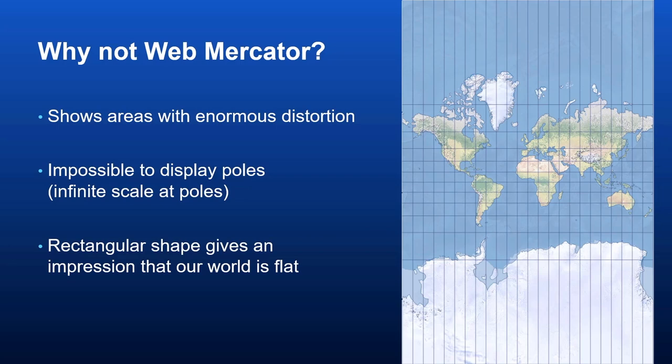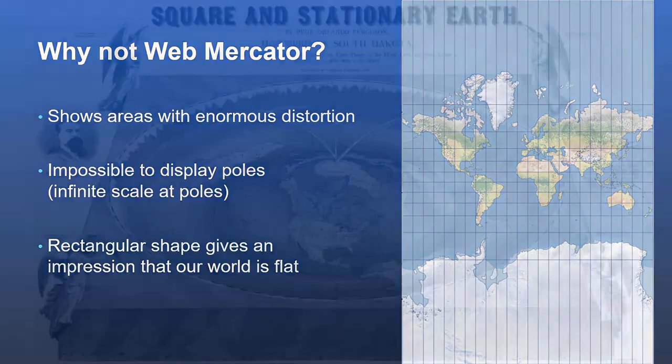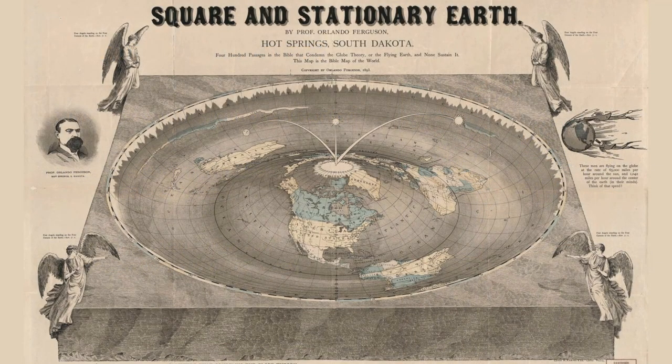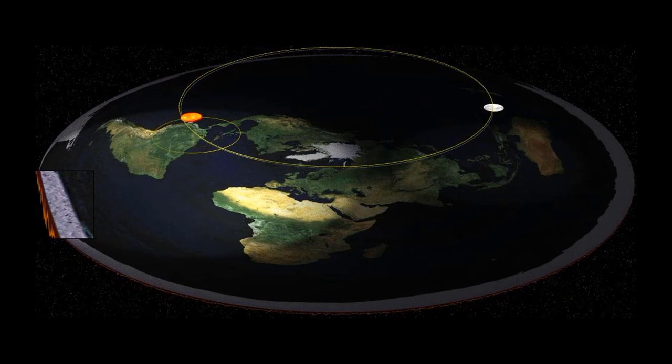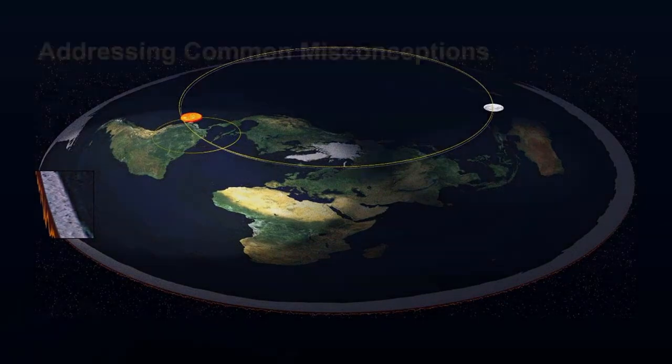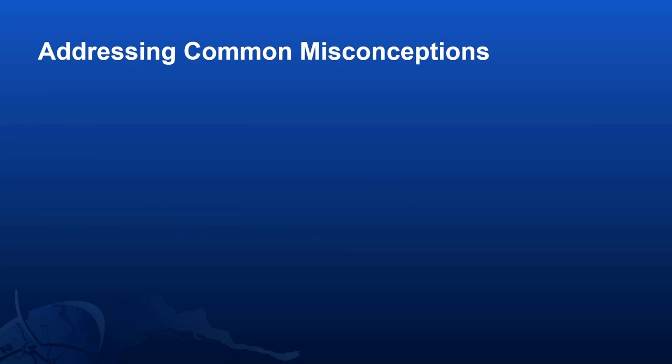Also, its rectangular shape gives an impression that our world is flat. Spoiler alert: our world is not flat. Even the Flat Earth Society does not use Mercator projection for their Earth model. So let's go over some common misconceptions and things you might think are true about Web Mercator that you think justify its use.